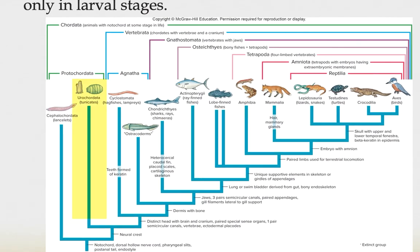The urochordates, commonly referred to as the tunicates, are a more diverse group of about 3,000 species, but these are very different animals, at least in their adult form. They're more like bag-like structures that are filter feeders. They retain all of the synapomorphic chordate characteristics only in the larval stages — in the adult stages, they have secondarily lost many of these anatomical features.